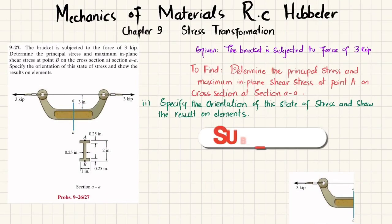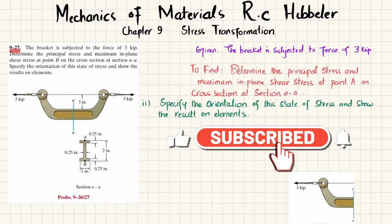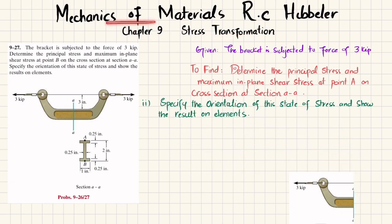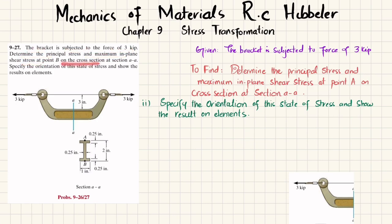Welcome back. Problem 9-27 is exactly the same as problem 9-26, taken from chapter 9, Stress Transformation in Mechanics of Materials by R.C. Hibbeler. The statement is: the bracket is subjected to a force of 3 kips. Determine the principal stress and maximum in-plane shear stress at point B on the cross section at section A-A. Specify the orientation of the state of stress and show the result on the element.